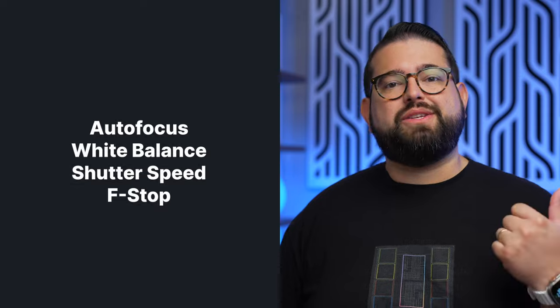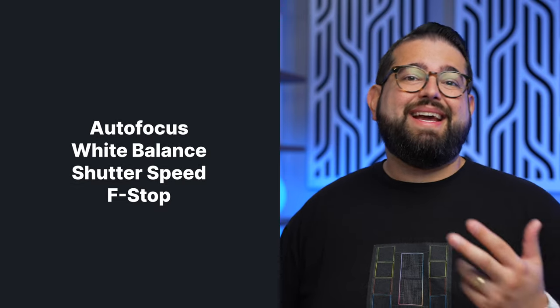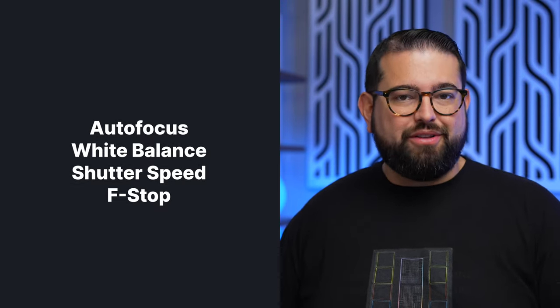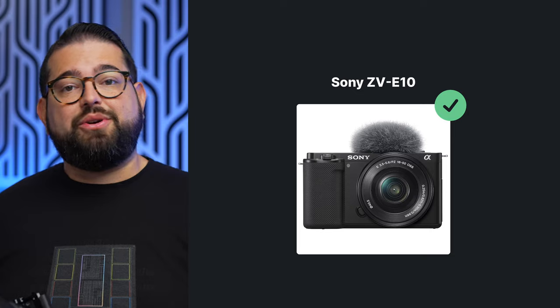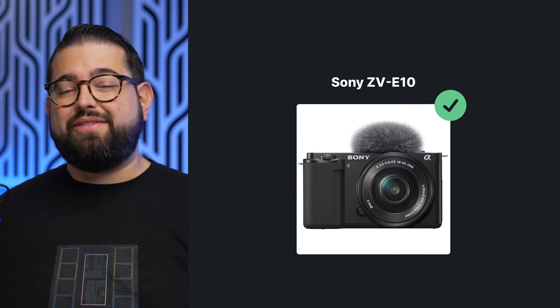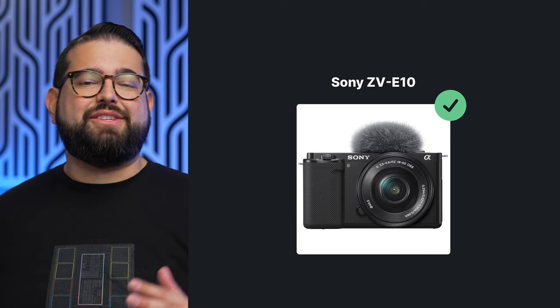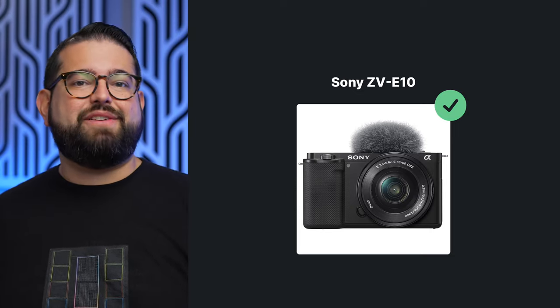When using a mirrorless camera for something like a video podcast, there are some important settings you need to have right — things like autofocus, white balance, shutter speed, and f-stop. We're going to go over all of those. I'll be showing you the menu for a Sony camera, like the Sony ZV-E10 or the A6400, so your menu will look similar. If you have a Panasonic or Canon camera, your menu will look different, but you will have all of these settings as well.